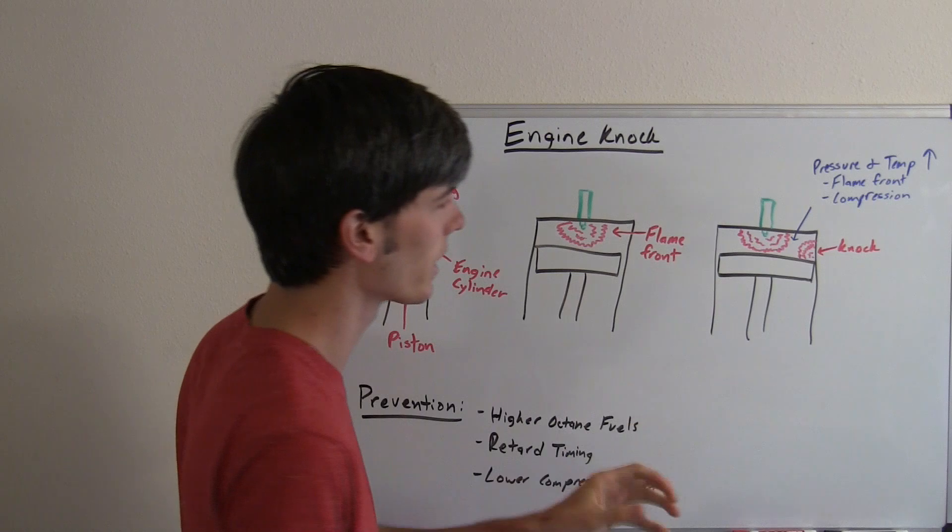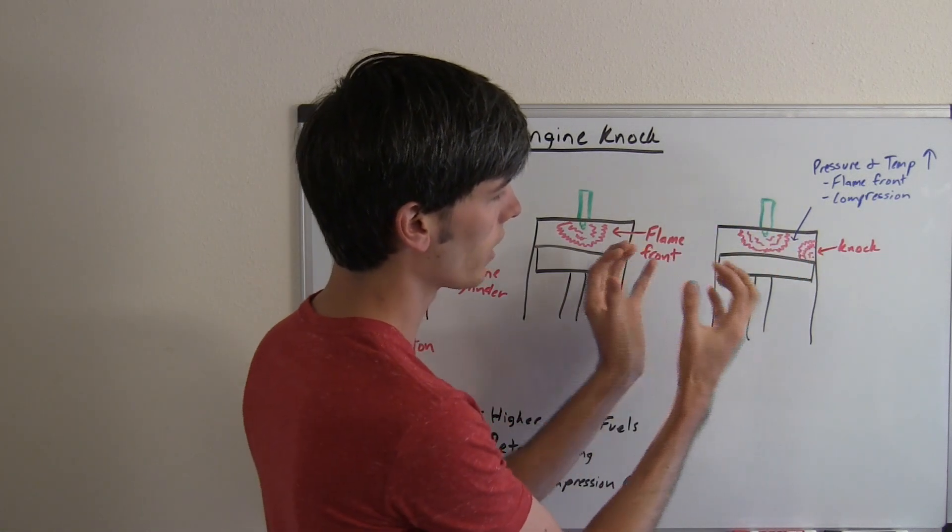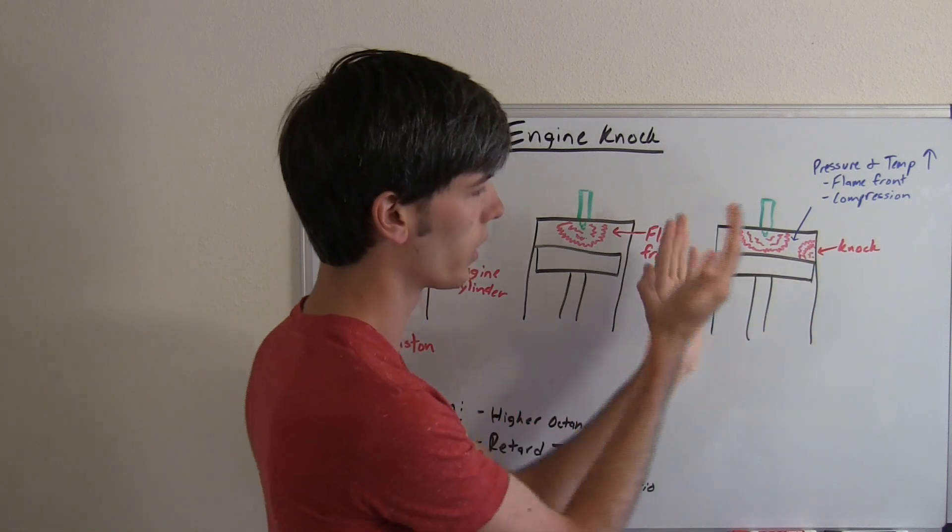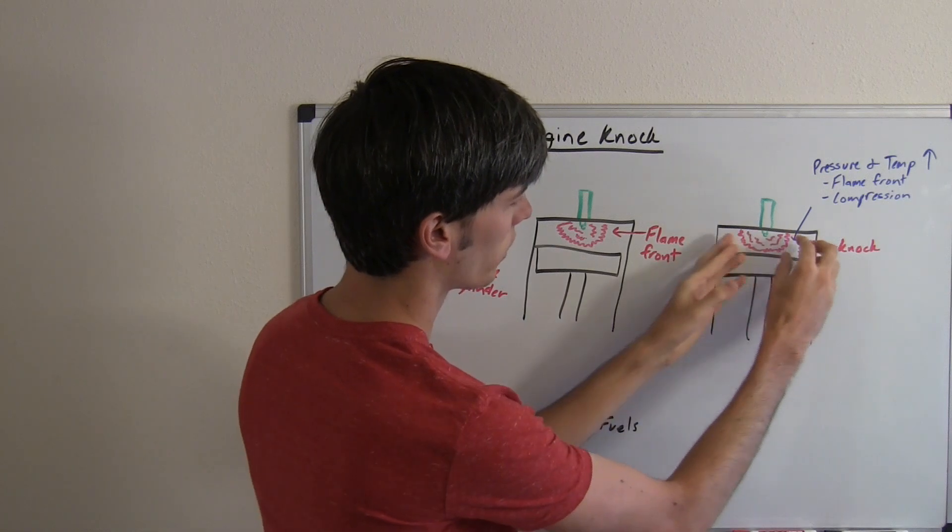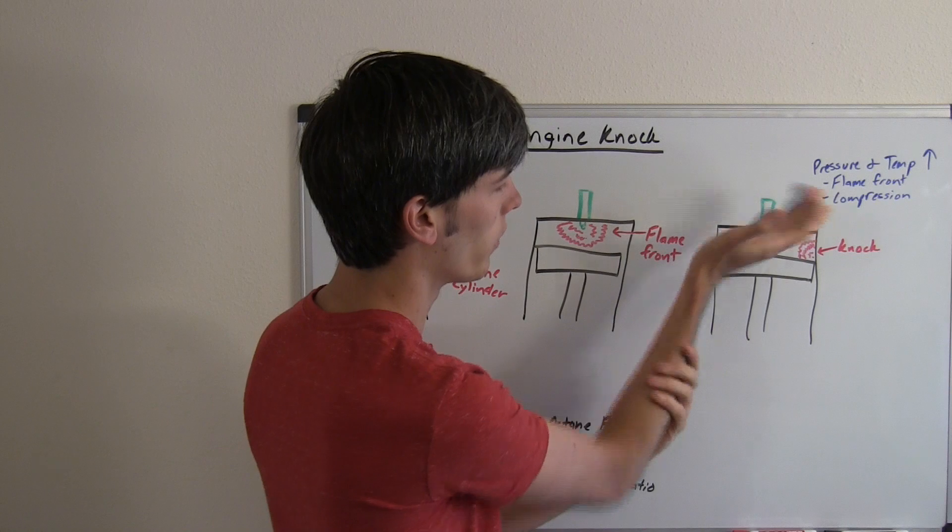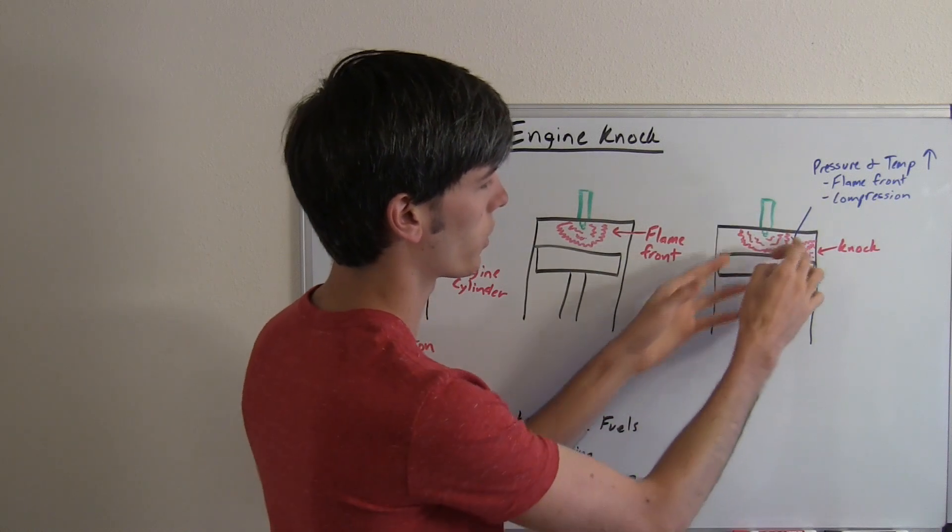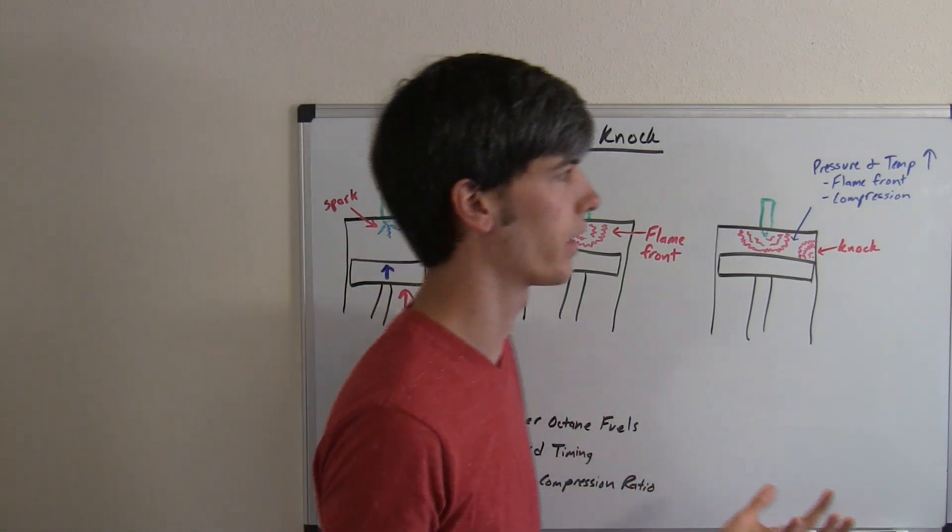What happens when you have knock is you've got that flame front expanding out, increasing the pressure in the rest of the cylinder. That pressure wave is expanding out, pressing all the air and increasing the pressure. You've also got that piston moving up, which is also increasing the pressure. So you've got very high pressure with an air-fuel mixture.